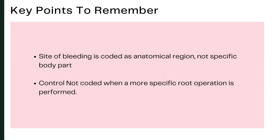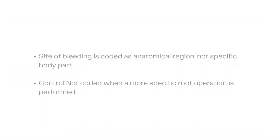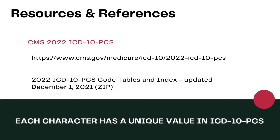Key points from this video: The site of the bleeding for a Control procedure is coded as an anatomical region and not as a specific body part — this applies specifically to the root operation Control. Control is used to represent procedures performed to treat post-operative or post-procedural bleeding. If root operations such as Bypass, Detachment, Excision, Extraction, Reposition, Replacement, or Resection are performed, those root operations should be coded and Control cannot be coded separately.